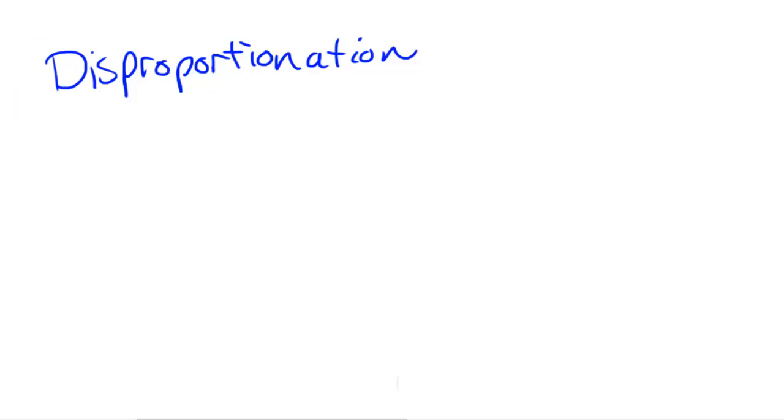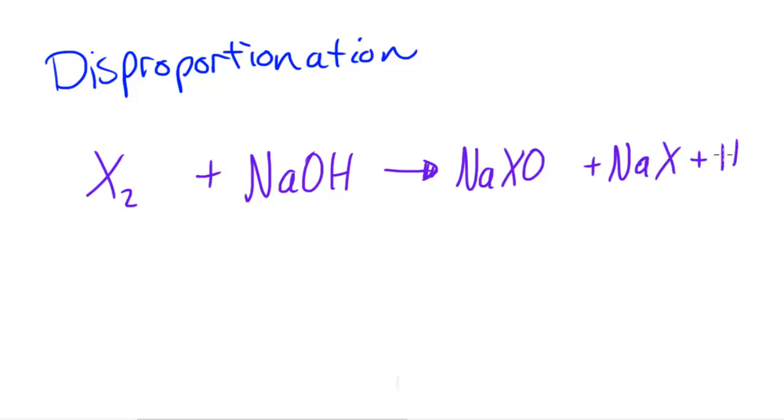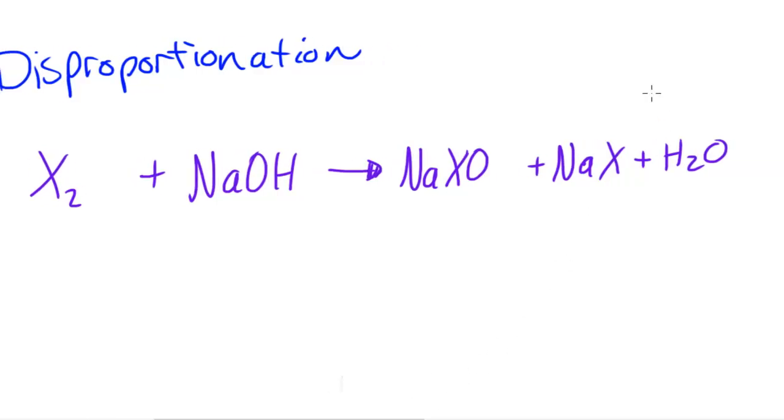If I just use X now to represent a halogen, so X, and that would be in the diatomic form, so X2. And this was to react with some sort of alkali, so maybe sodium hydroxide, NaOH. When this reacts what it's actually going to form is NaXO and NaX and H2O. So it's going to form those three products.